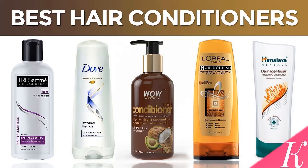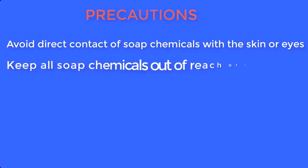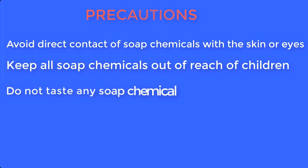Avoid direct contact of chemicals with the skin or eyes. Keep all chemicals out of reach of children and do not taste any chemical. Now let's go to the list of chemicals needed to produce hair conditioner.